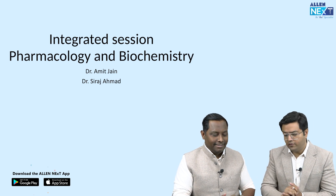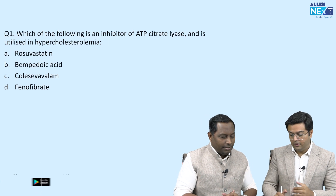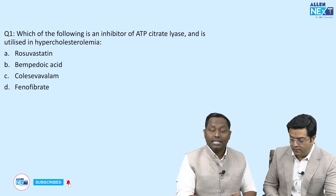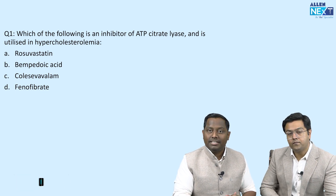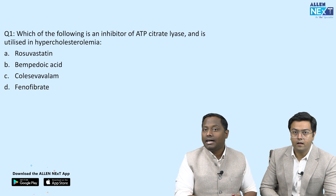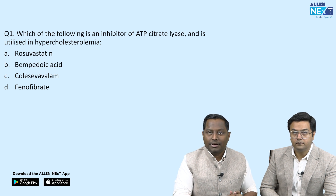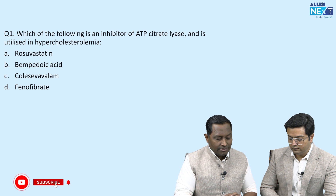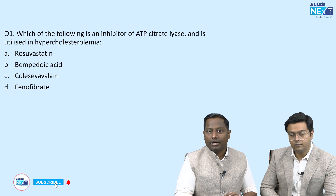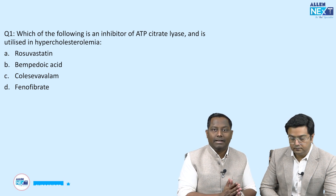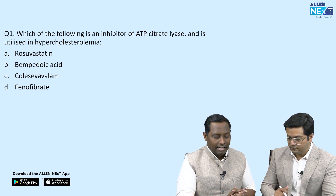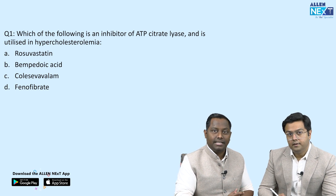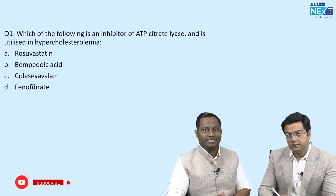Let's start with question number one: which of the following is an inhibitor of ATP citrate lyase and is used in hypercholesterolemia? The options are rosuvastatin, bempedoic acid, colesevelam, and fenofibrate. Before going to the drug, I'd like Dr. Amit sir to put some light on what ATP citrate lyase is and its role in cholesterol synthesis.